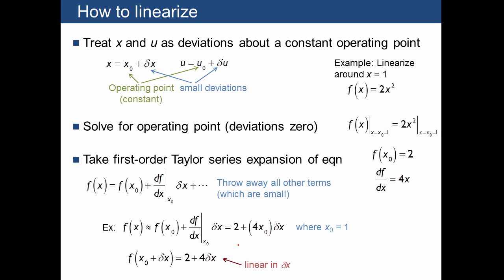Here's an example. Let's say we want to linearize f(x) equals 2x² around 1. Well, we are going to plug in x equals x₀ equals 1. That's just 2x² evaluated at 1, and that's just going to give us 2. That's the first term in our Taylor series.